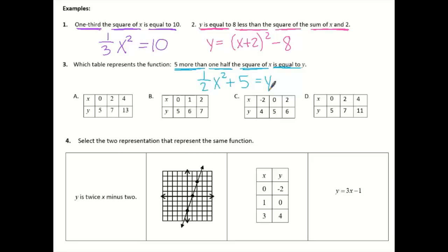So you can write first, is equal to Y. Sometimes we don't like to have Y on this side, so you can write that to say Y equals one half X squared plus 5.